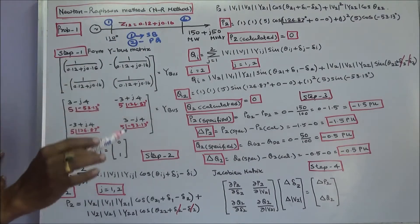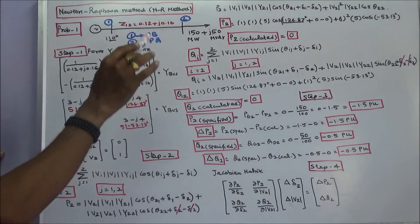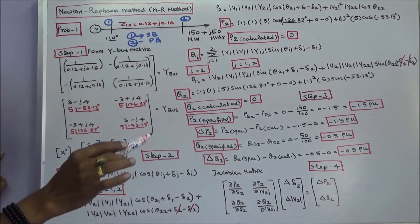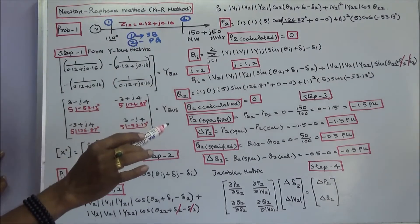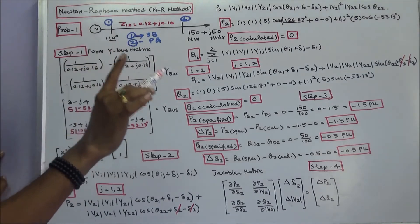The question is: calculate V2 and delta 2 using Newton-Raphson method, perform one iteration only.